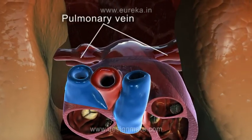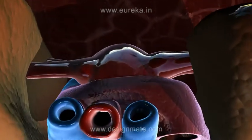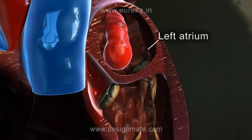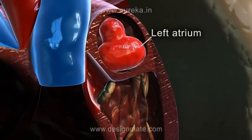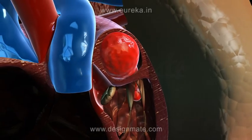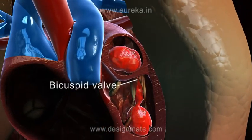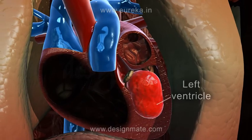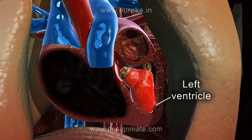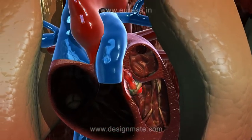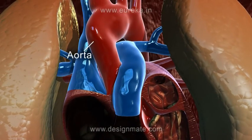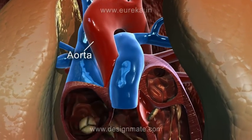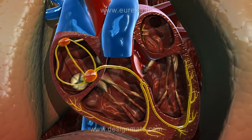The pulmonary vein brings back the oxygenated blood into the left atrium of the heart. During atrial contraction, the blood passes through the bicuspid valve into the left ventricle. During ventricular contraction, the blood pushes its way into the aorta, from where it goes to various parts of the body.